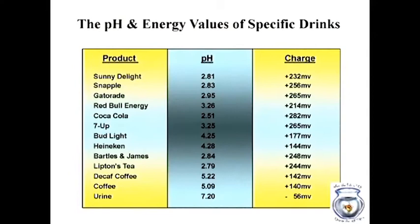As I've tested many different substances like orange juice, I found that the pH is highly acidic. Sunny Delight has a pH of 2.81 with an electrical charge saturated with hydrogen ions, expressed as a positive charge at 232 millivolts. Bud Light has a pH of 4.25, also acidic, with an electrical reading of 177 millivolts. Coffee is at pH 5 with positive 140 millivolts.